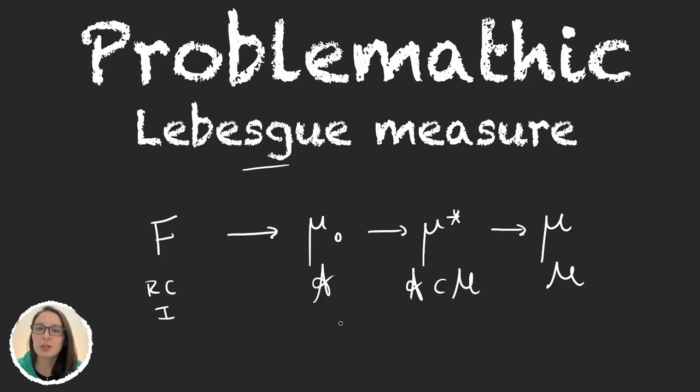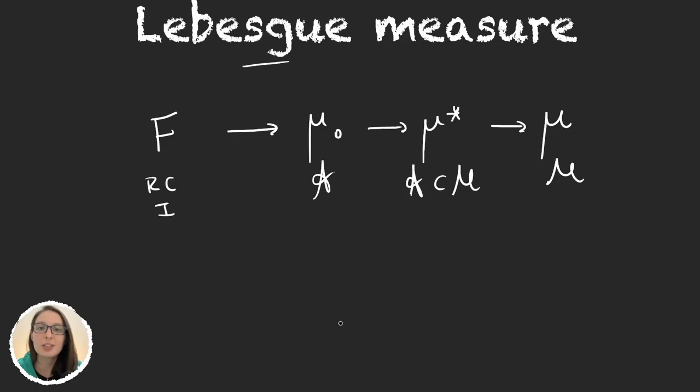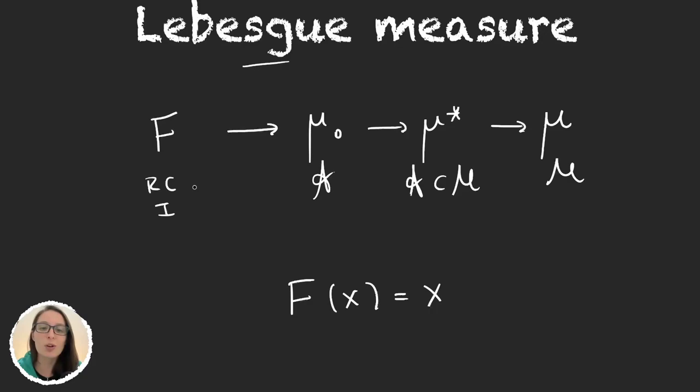So how do we use all this to define Lebesgue measure? And now is when you will be very disappointed. Lebesgue measure is the measure obtained with all this, taking f(x) to be equal to x. I know, it sounds so simple. So we did all this just so that I could tell you Lebesgue measure is the usual way of measuring things in the real line? Well, yes, we did.